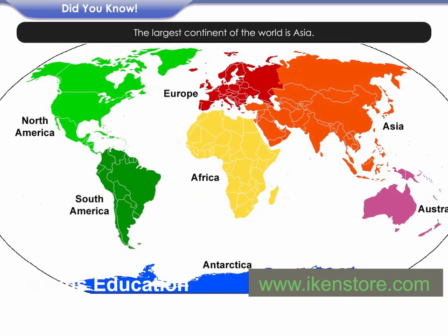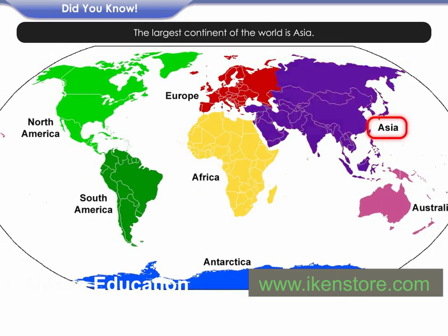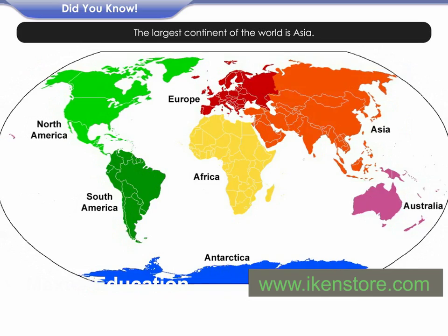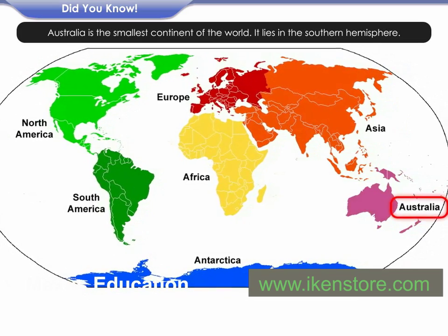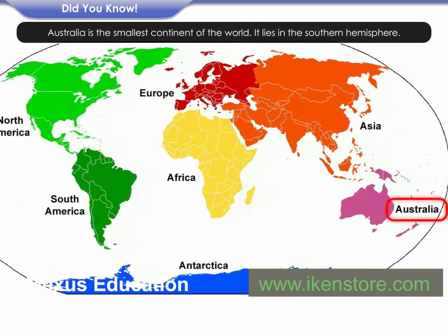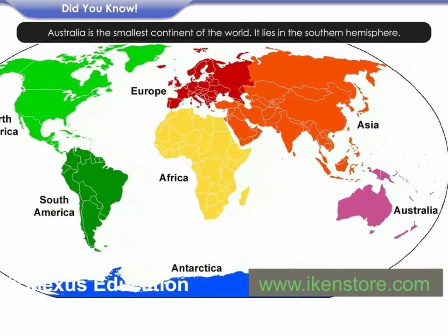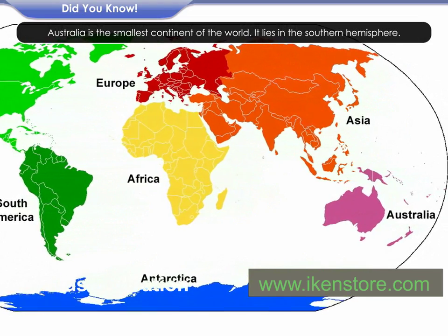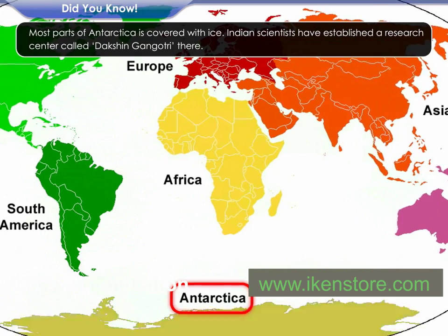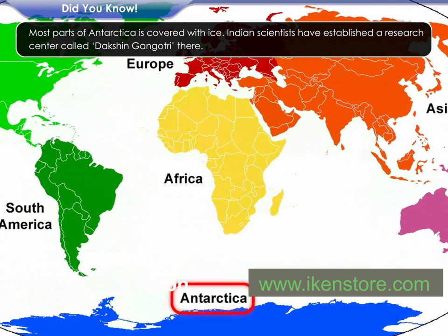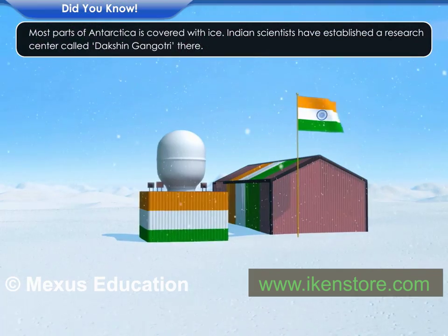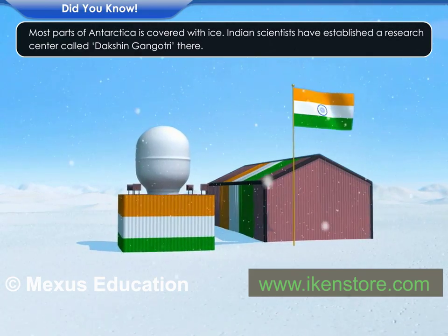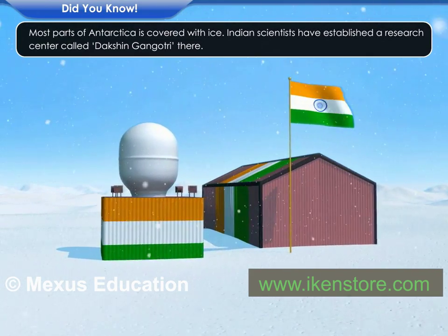The largest continent of the world is Asia. Australia is the smallest continent of the world and it lies in the Southern Hemisphere. Most parts of Antarctica are covered with ice. Indian scientists have established a research center called Dakshin Gangotri there.